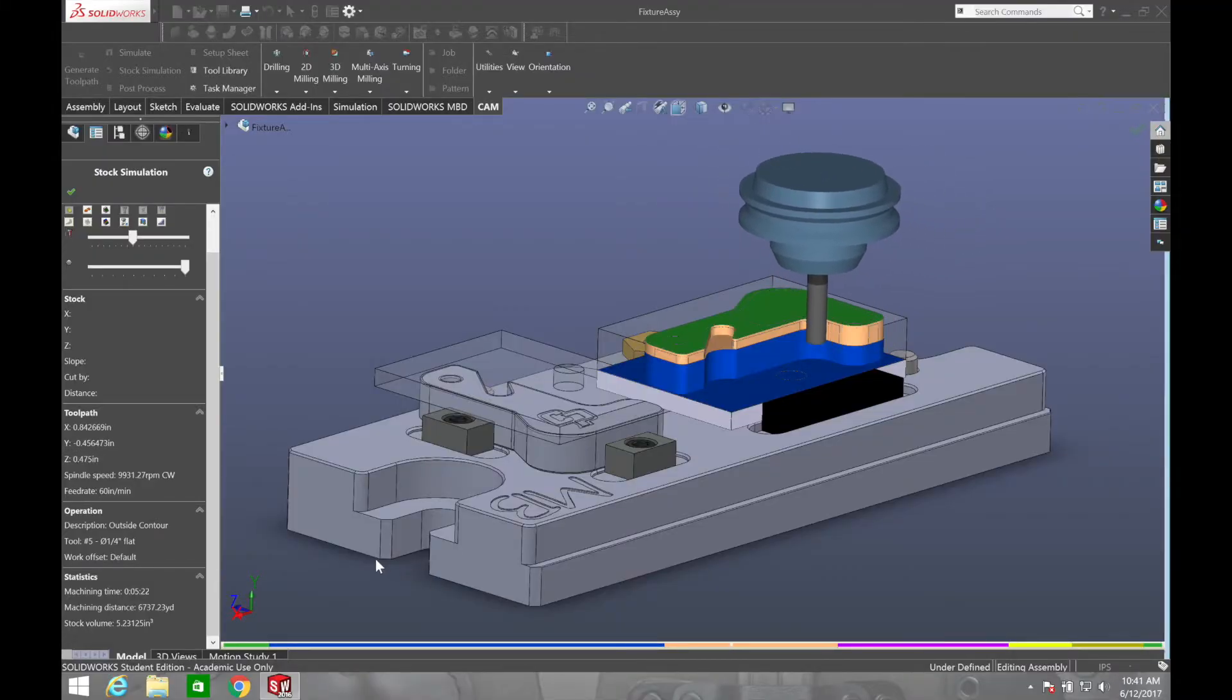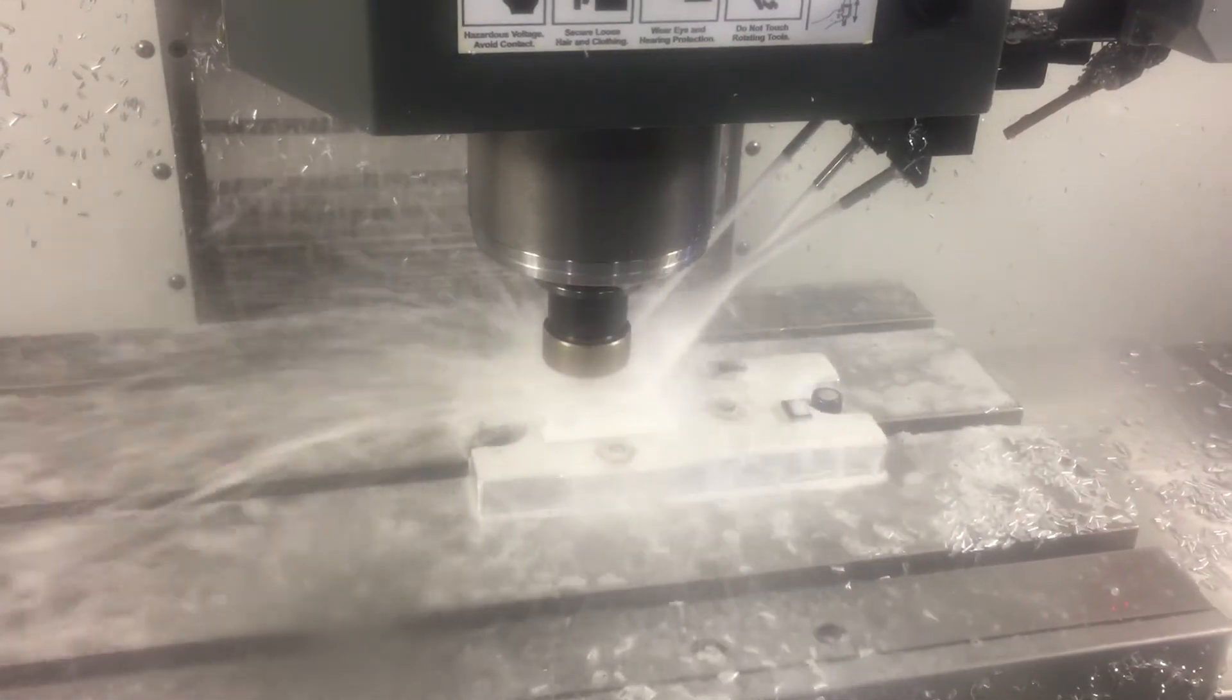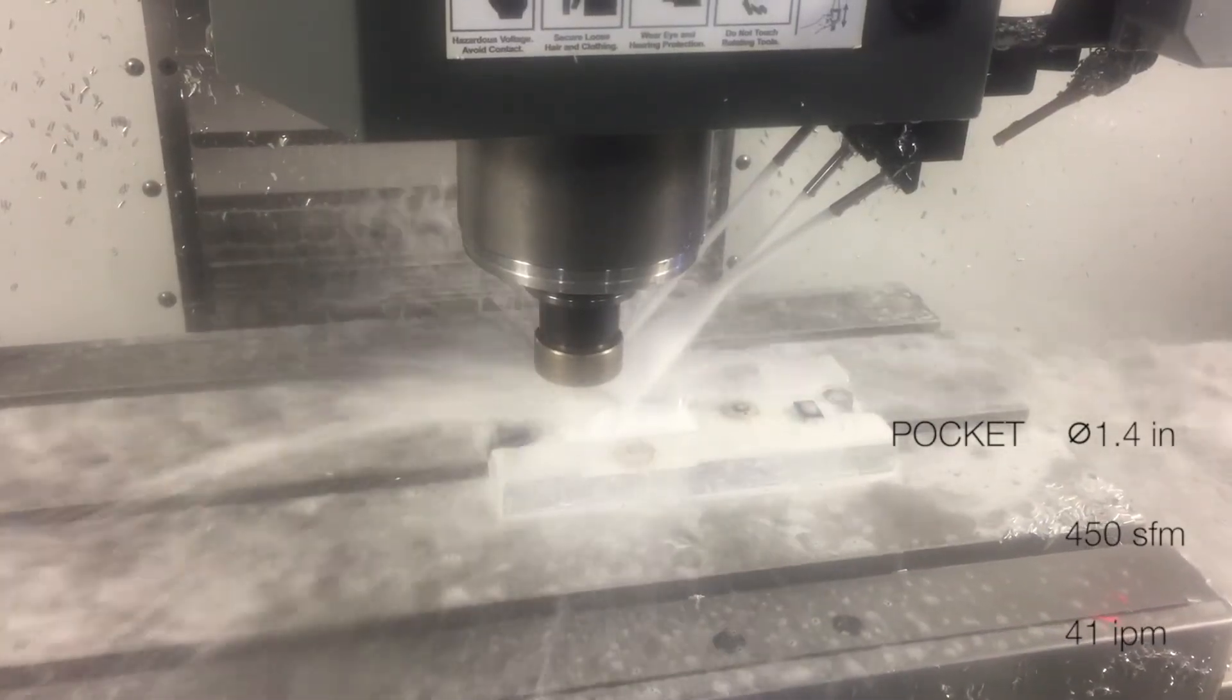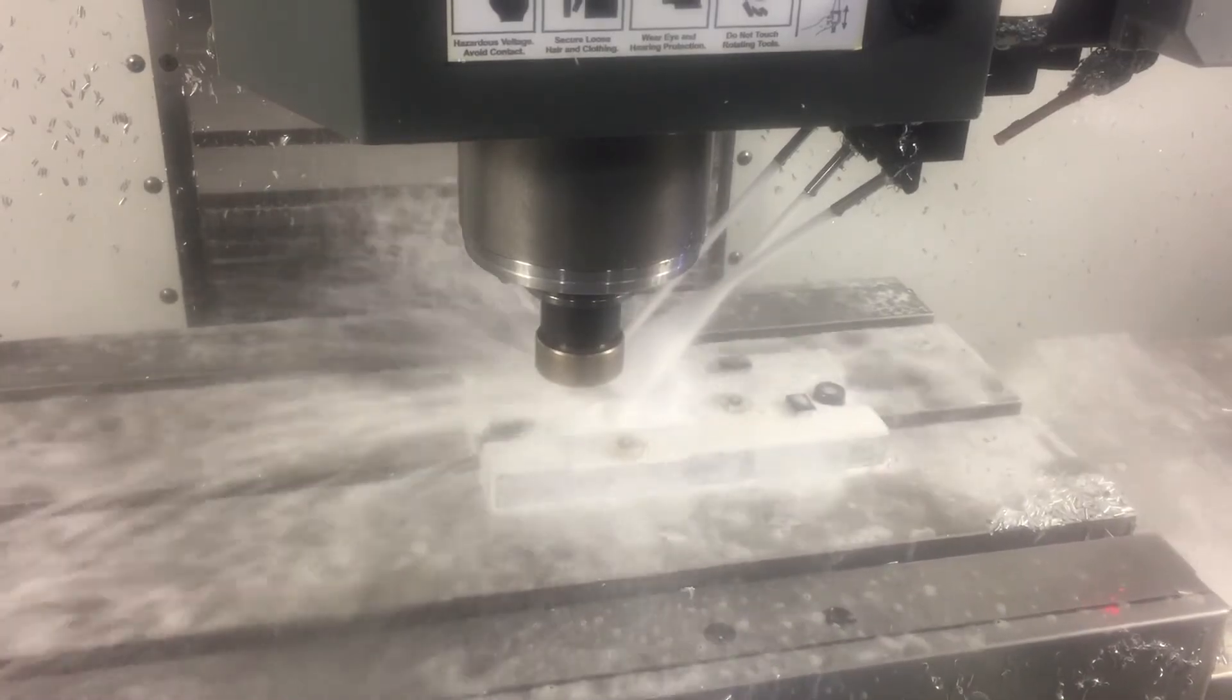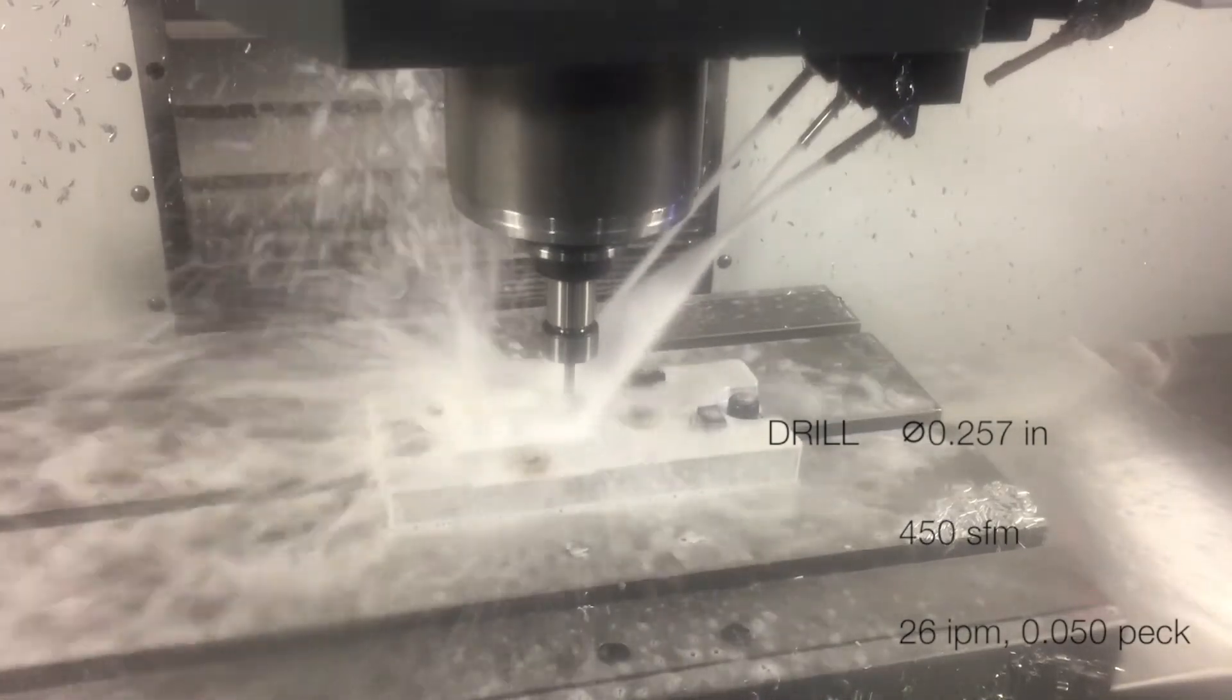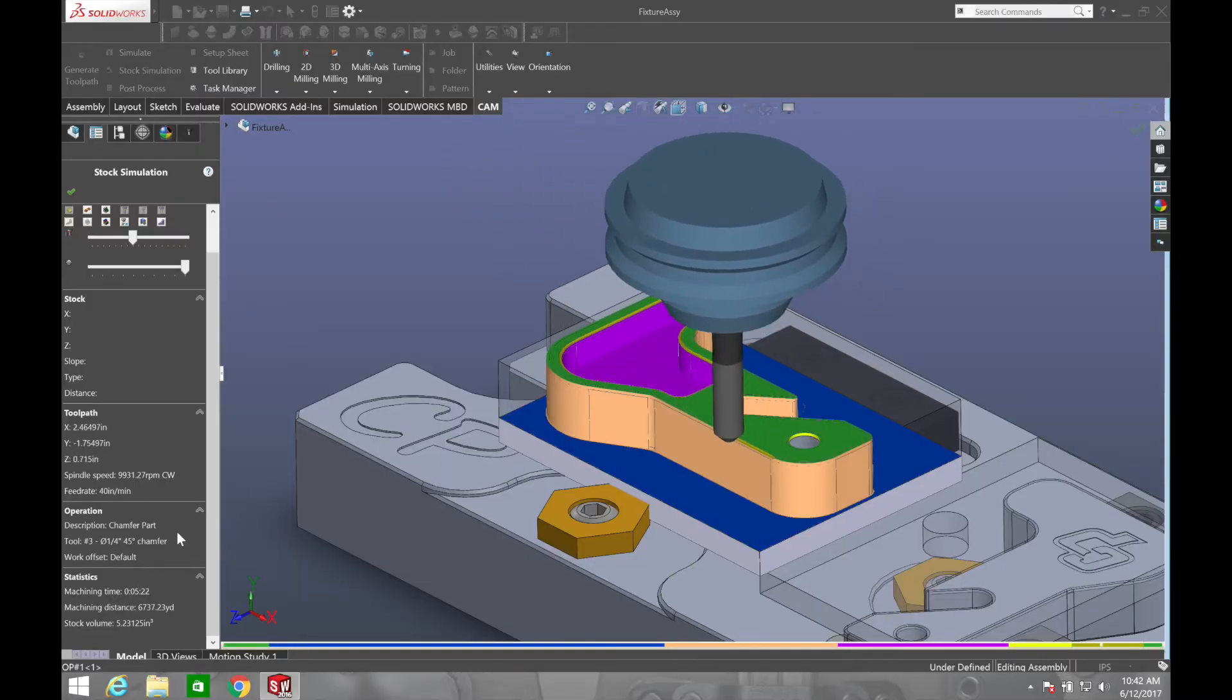A ¼ inch diameter end mill will be used to finish Profile Op1. That same ¼ inch diameter end mill will be used to create the pocket. A chamfer tool will be used to break all sharp edges.